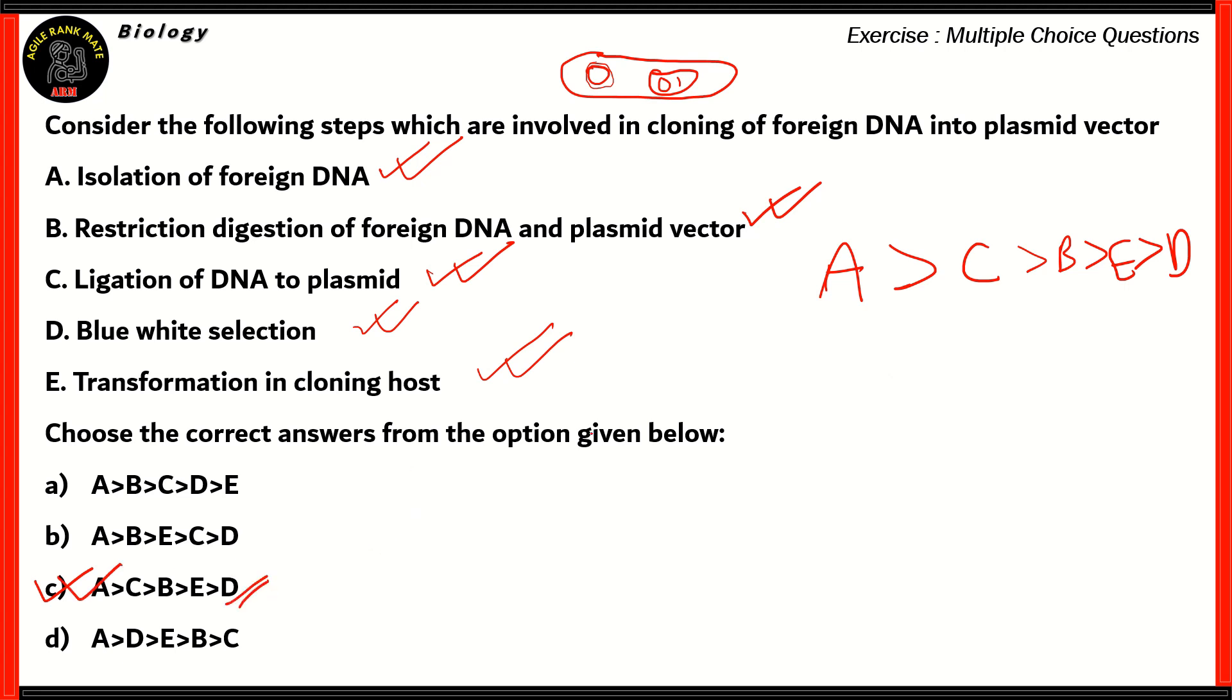Now, if you're doing this in your exams, you can actually stop at C, because by that time, you would understand that option C is the only option containing the first statement as A and the second statement as C. So therefore, option C turns out to be the right option. The other options are incorrect, because in both A and B, statement B is the second step, whereas in option D, statement D is the second step in the process, which is incorrect.